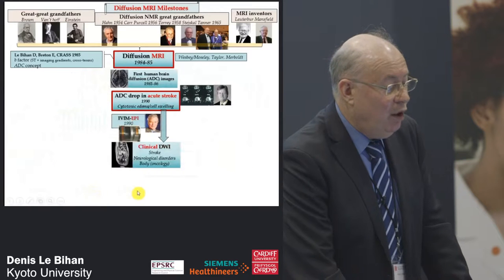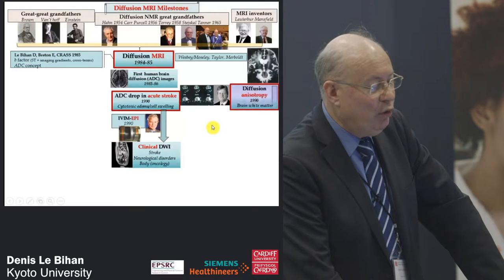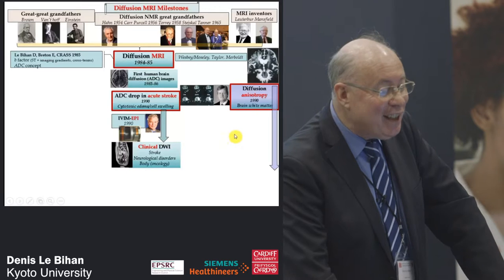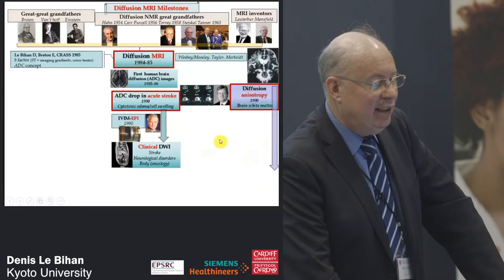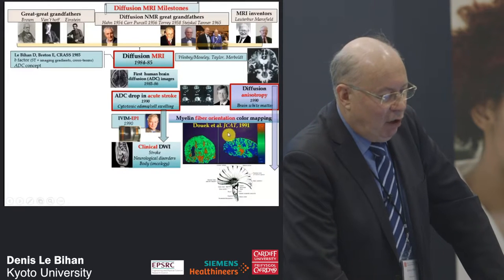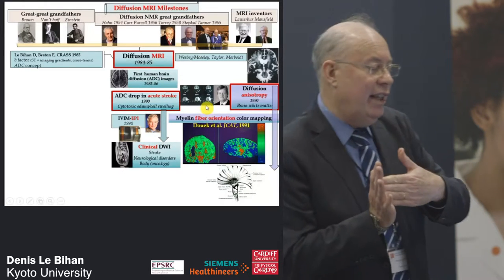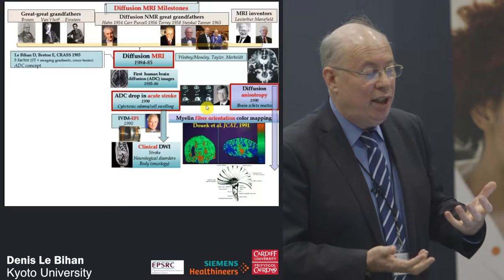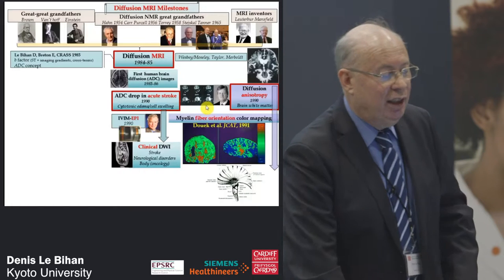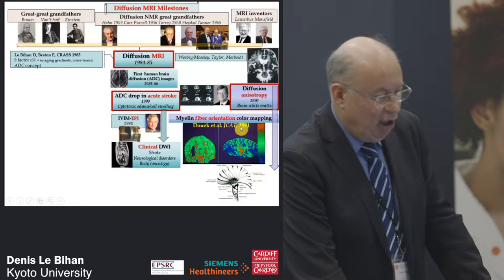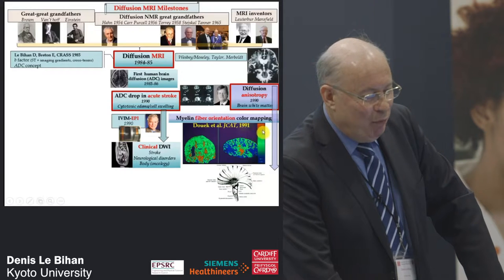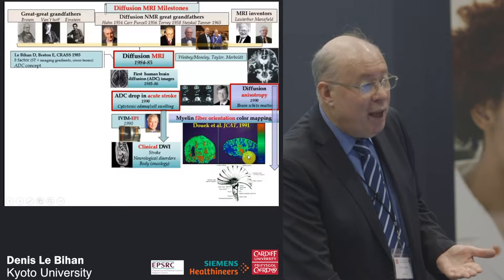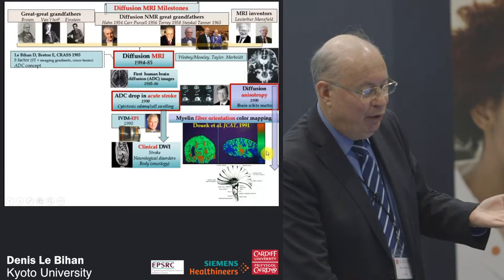Mike Moseley made another big discovery: diffusion in white matter is anisotropic. This was a completely new avenue. I was at NIH at the time, and with Philip Douek we said: if diffusion is not the same according to the direction of fibers — it's faster along the fibers — we can reverse this idea and obtain images showing the orientation of fibers based on the highest diffusivity direction. That was the very first coloring of white matter. We used a vector approach, measuring diffusion in two or three perpendicular directions.